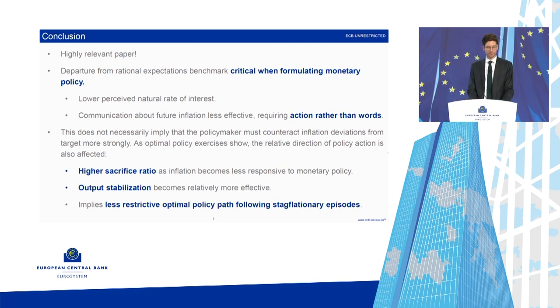Let me conclude: this is a highly relevant paper. It's important to look at departures from rational expectations. The lower R-star is something I also find in my exercises. Regarding the message that we should act against inflation rather than only communicate against it — probably true in a normative analysis — what I find is that we should actually focus more on output than inflation due to the higher sacrifice ratio, meaning less restrictive optimal policy in a stagflationary episode. Thanks a lot. Stefan: these are great comments; the question of what's optimal monetary policy in such a world is very natural and interesting.